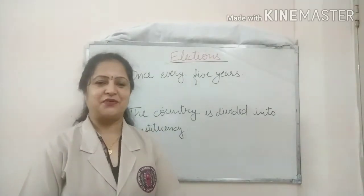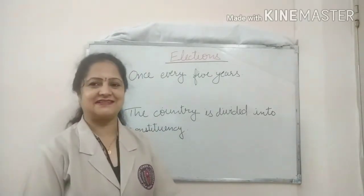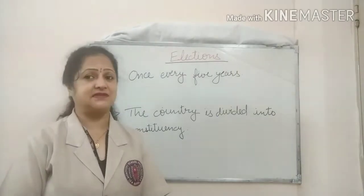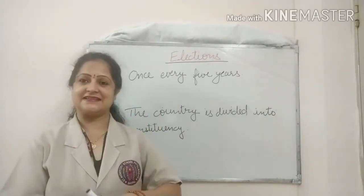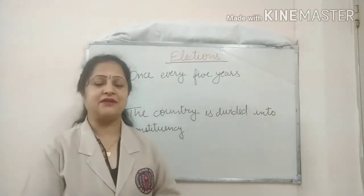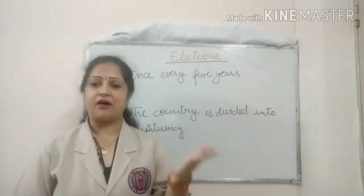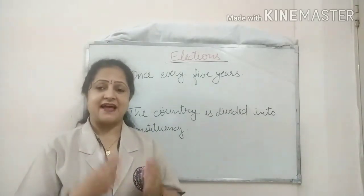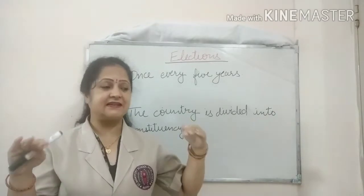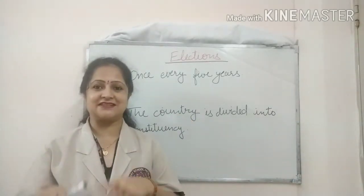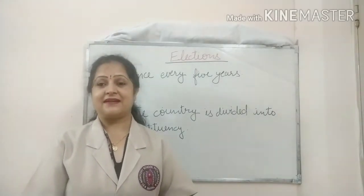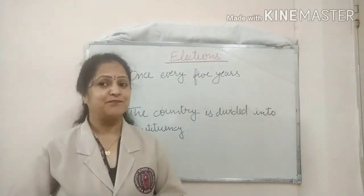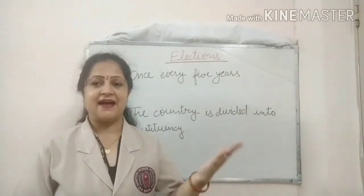Good morning dear students, hope you all are fine and doing well in your studies. In my previous video we started with our fourth chapter of civics — Parliamentary Government: The Union Legislature. I told you about the federal structure of government, where in India power is divided at the state level as well as the central level. This division of power is called the federal structure of government. After that, I told you that in India we have a parliamentary form of government, where the Prime Minister is the real head and the President is the nominal head.